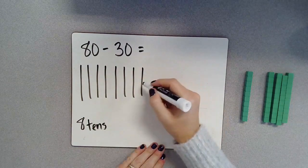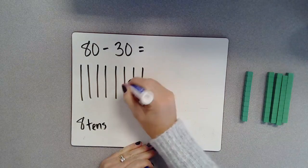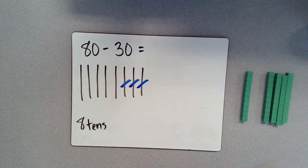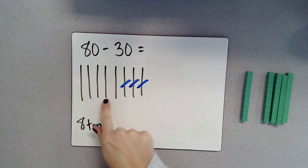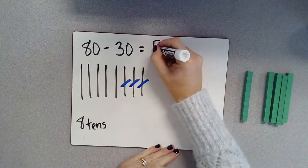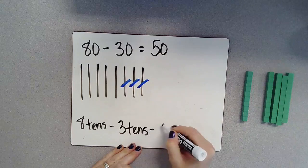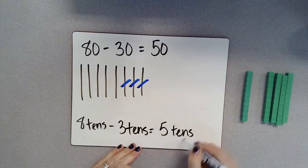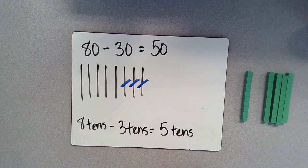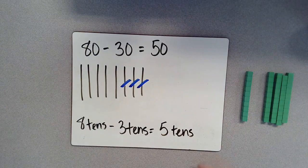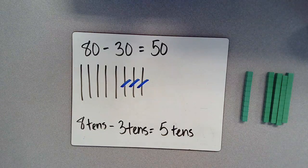So if I'm going to take away 30, I'm going to mark out 3 of these. So 10, 20, 30. I'm going to see how much I have left over. 10, 20, 30, 40, 50. So I have 50 left over or I have 5 10s left over. And again, if I say 8 minus 3 would give me 5. So as you are solving some of these problems, think about some of these strategies we have used to add and subtract multiples of 10.